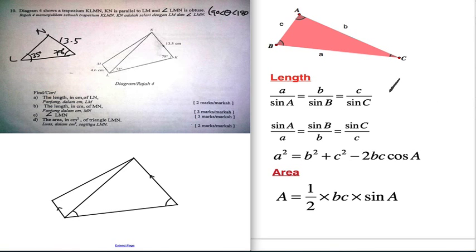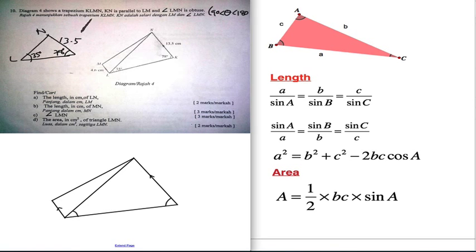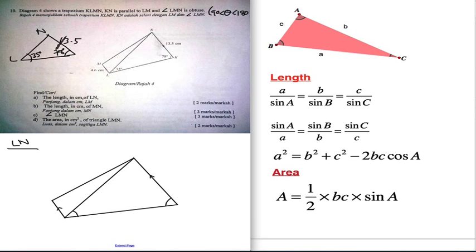If you want to find a length, make sure you use this form of the sine rule: A over sin A. Whenever you have one length and one opposite angle, you can use this. My length is 13.5 and my opposite angle is 35. So I write 13.5 over sin 35. Then for the other side, LN over sin 78 — because 78 is the opposite angle of LN.